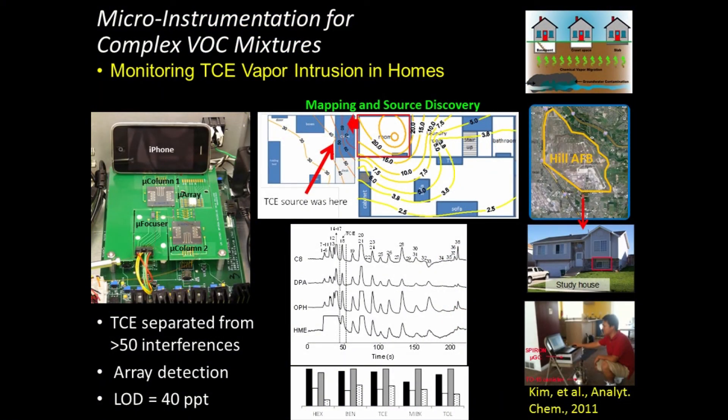And the upper curve there shows you the kinds of profiles we can get walking around the house trying to measure the concentrations of TCE and find the location of the source of the TCE in the house. And then I've included a chromatogram there. We use a sensor array so we get four outputs with a bunch of peaks there and we were able to tease out the TCE from them. So that's just a quick introduction to our work.